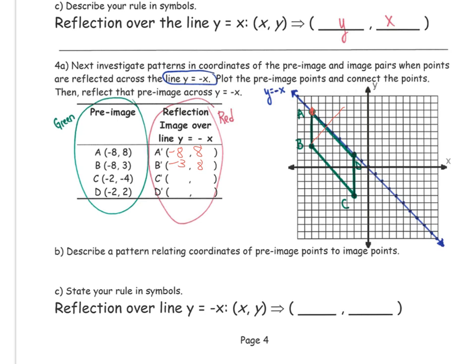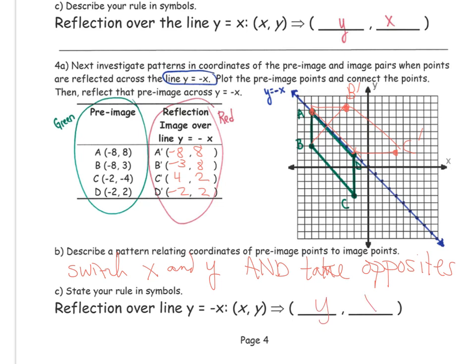Let me count: 1, 2, 3 up. 1, 2, 3, 4, 5, 6, 7, 8. That would be at b prime. And c prime would be, if I'm using that rule, switch the x and y values, but take the opposite. 4 comma 2. Let's see if that works. Over 1, 2, 3, 4 up 2. And that's c prime. That looks like it's a good reflection over that line. And then d would be the same as negative 2, 2, because we're switching x and y, but taking the opposites of them. We're switching x and y, and then we're going to take opposites of them. The rule would be switch x and y, and then take the opposites of them.